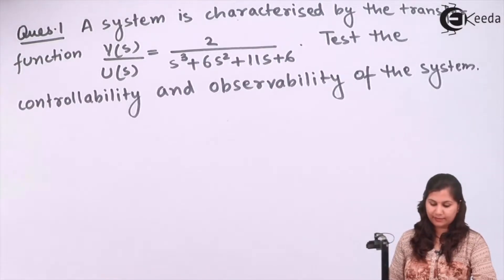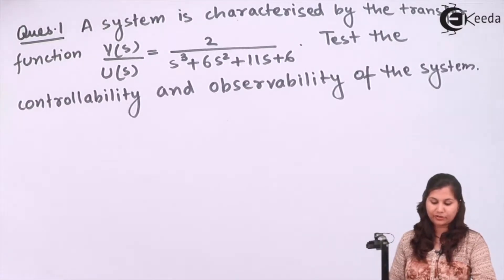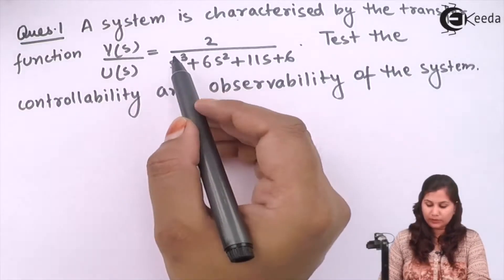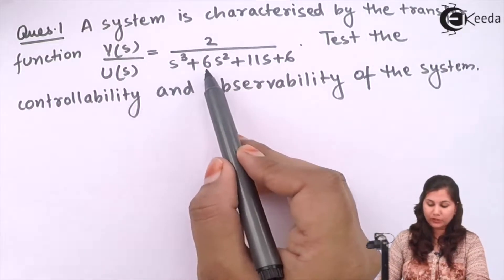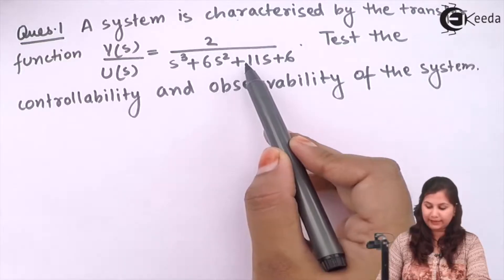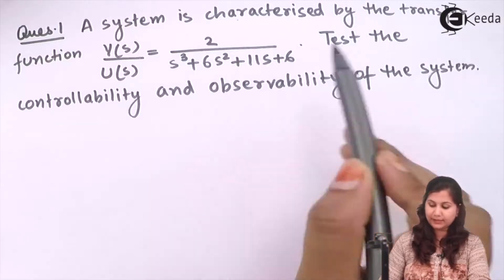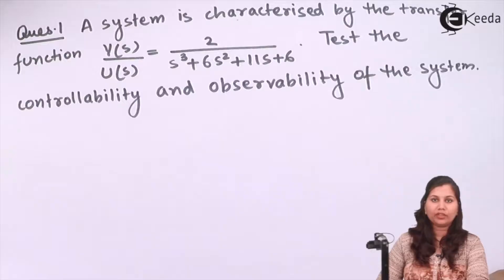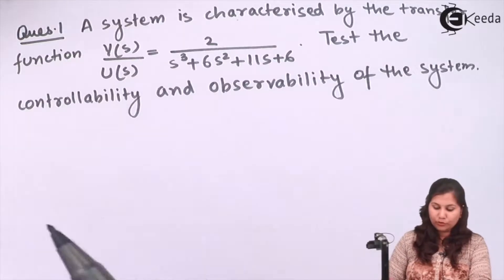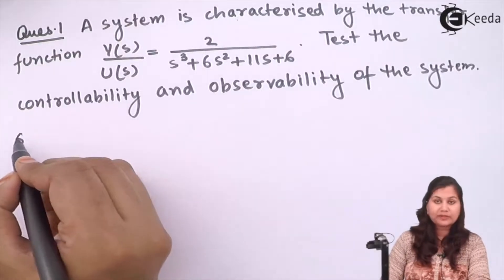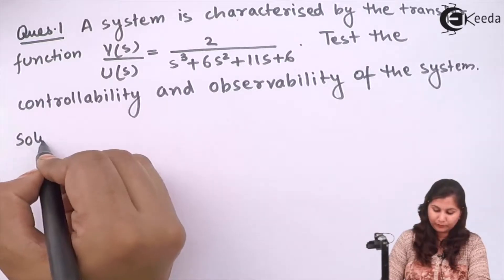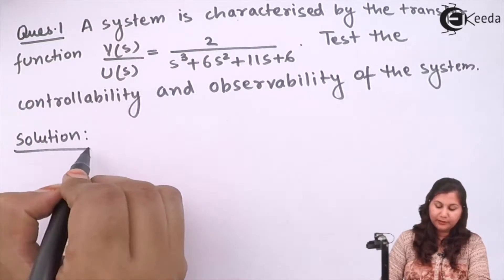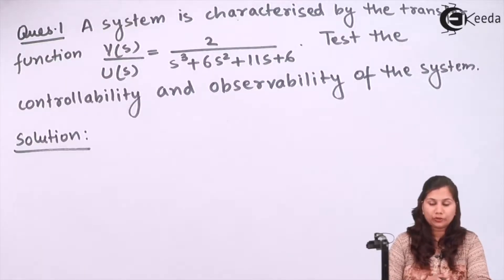The problem is we are given a system which is characterized by the transfer function Y(s)/U(s) equals 2 upon s³ plus 6s² plus 11s plus 6, and we have to test the controllability and observability of the system. Now to check these, we have the matrices Q₀ and Qc.